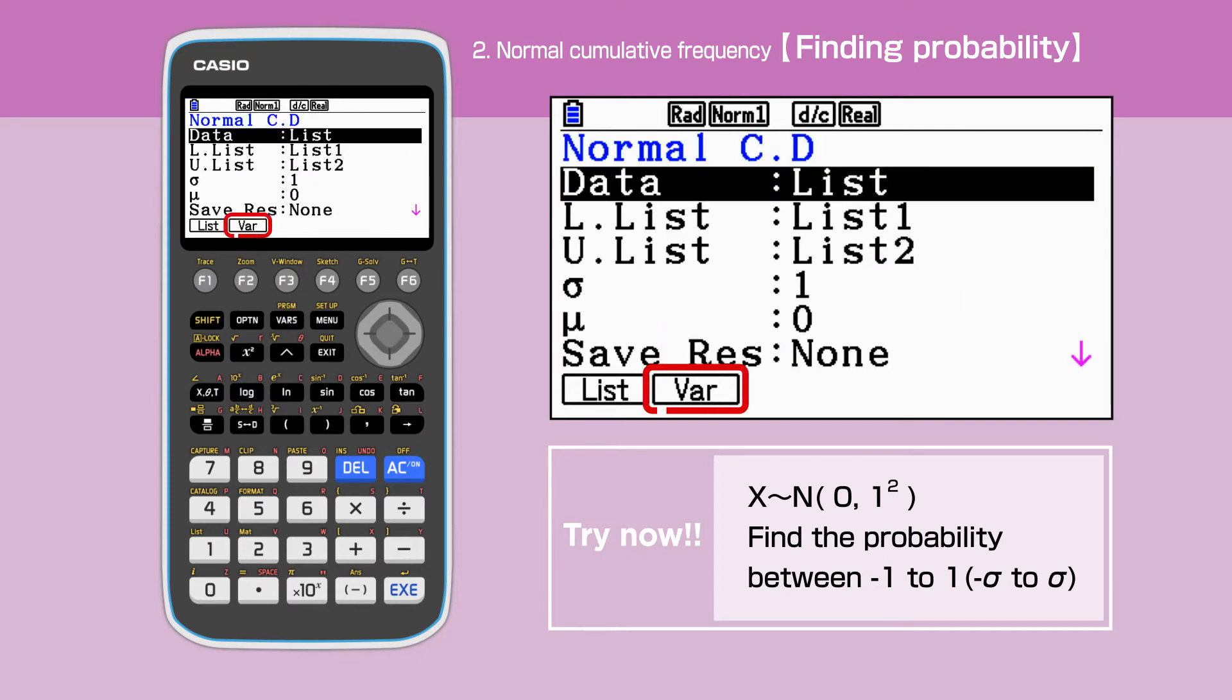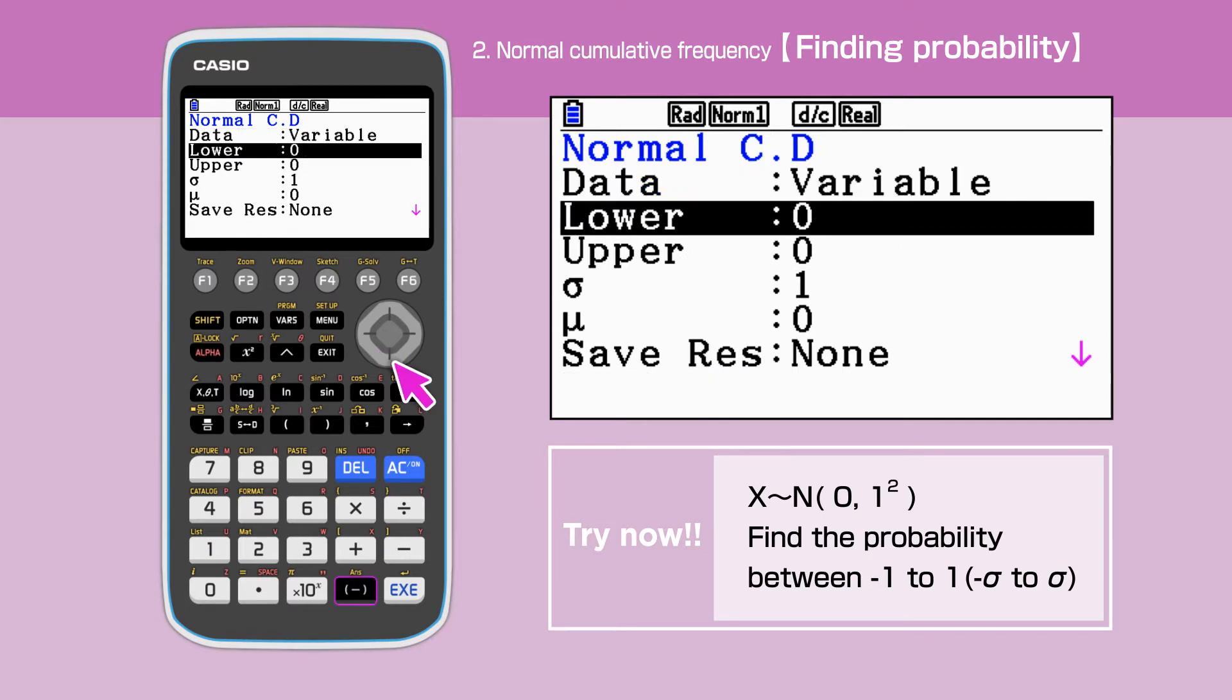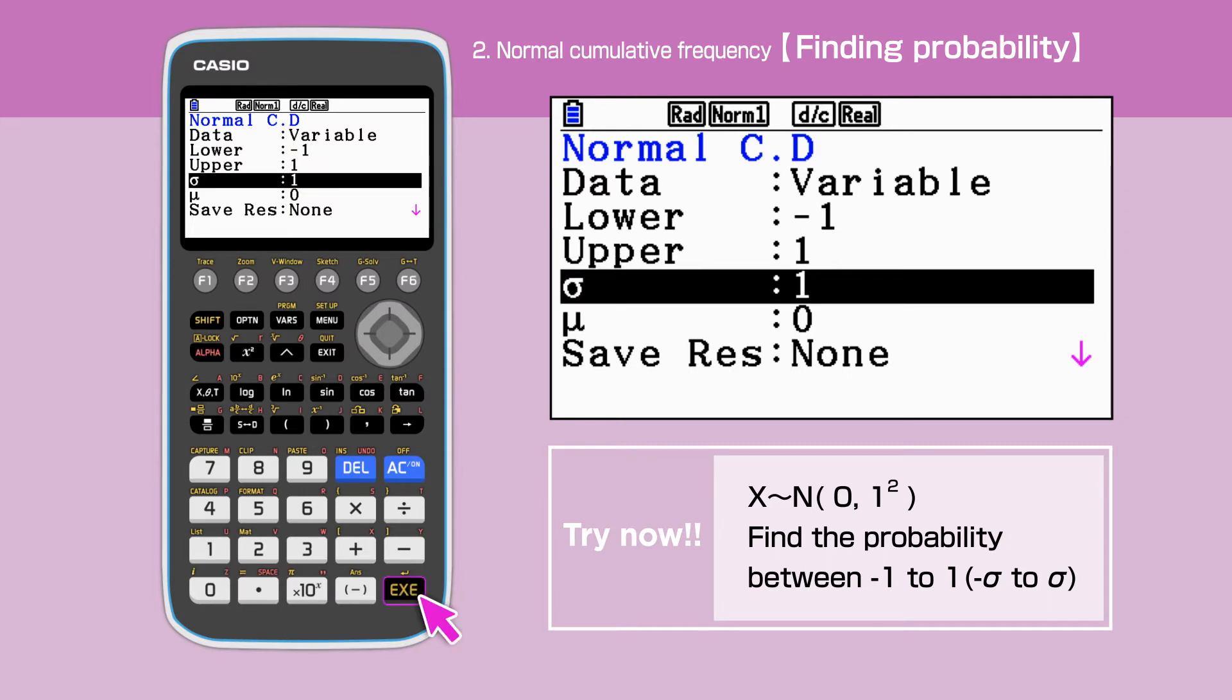Select Variable by pressing F2 for the data. Enter minus 1 for the lower and 1 for the upper boundaries for X. The original setting for the standard deviation and the mean is 1 and 0, respectively, for this calculator.